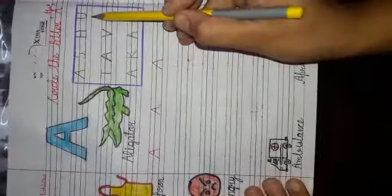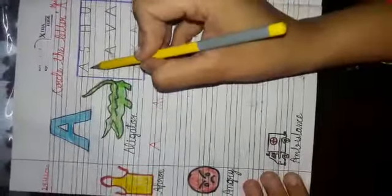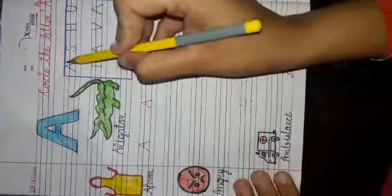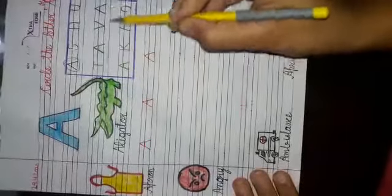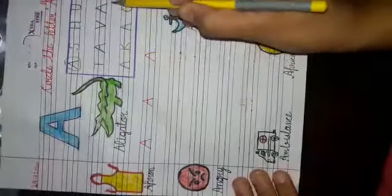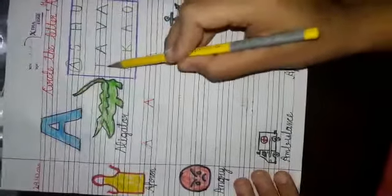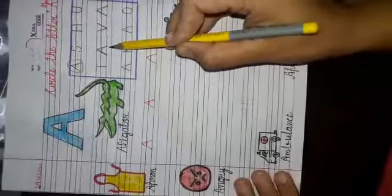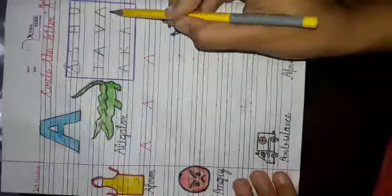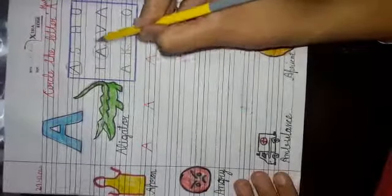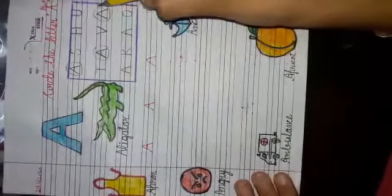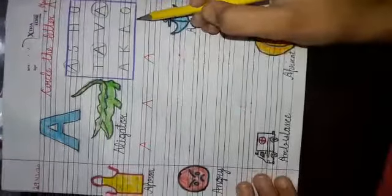Now circle the alphabet A like this. In the second row, where is A? This, this, this, or this? Yeah, you are right, this is A and also this is A. Very good, well done.